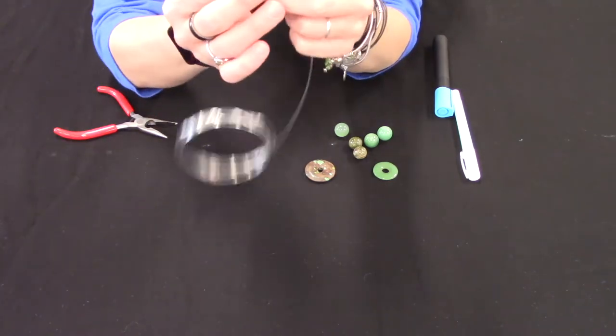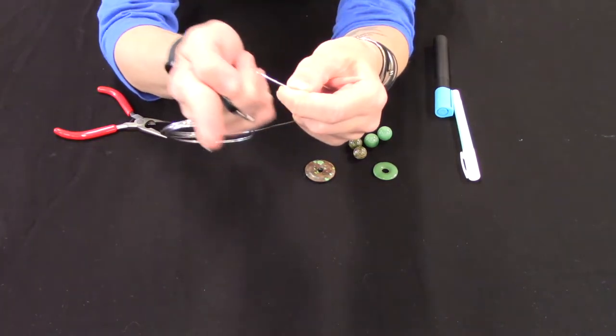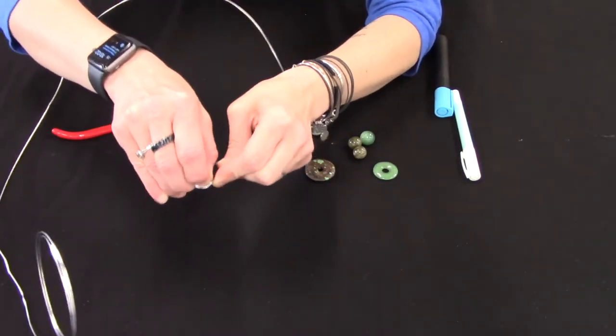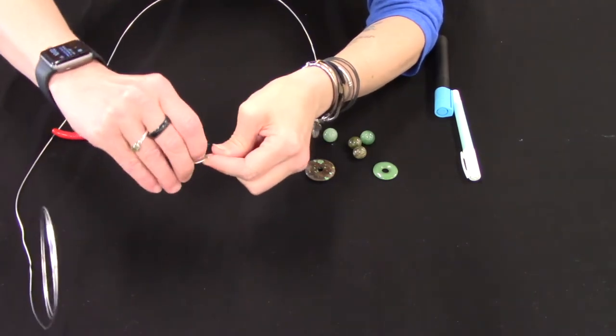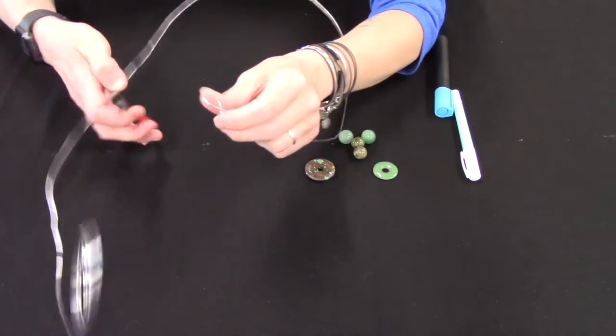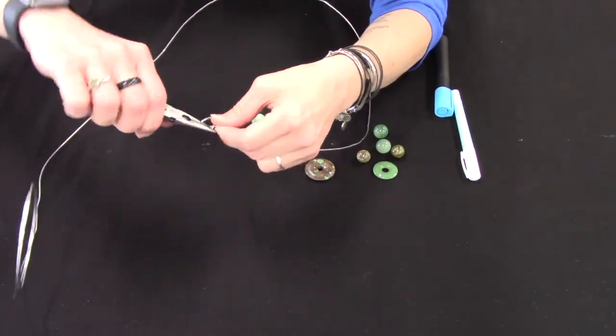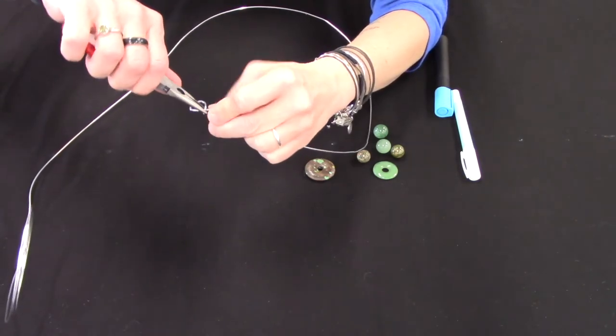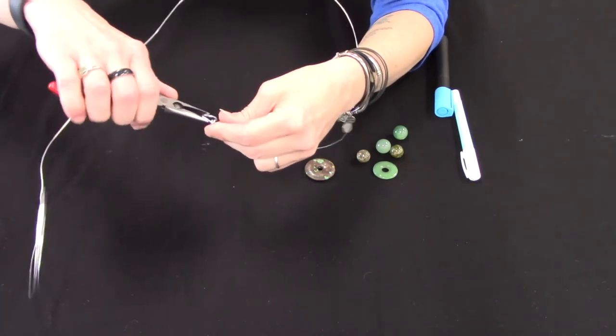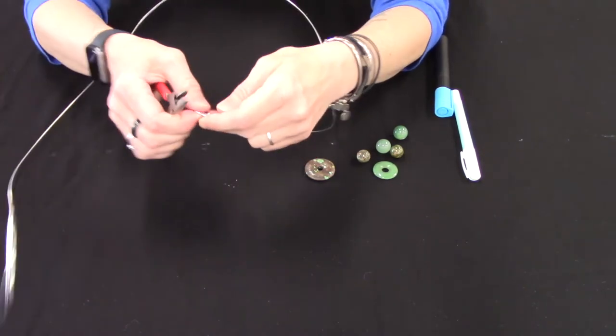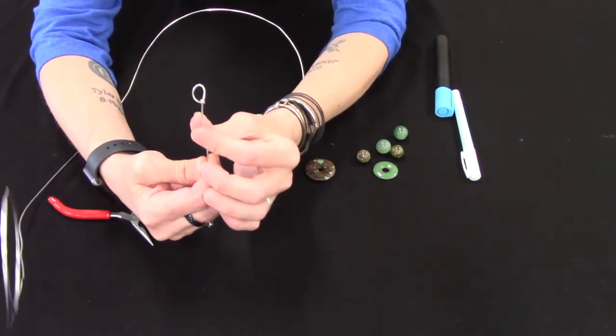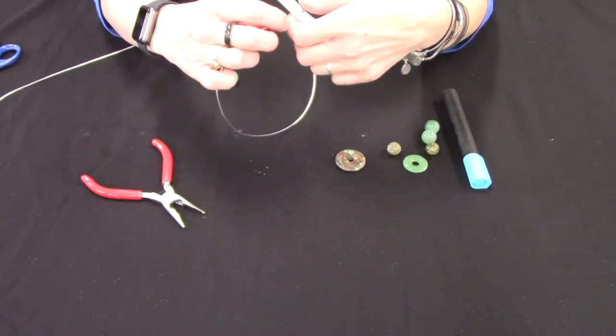And then I'm going to bend it over. This is going to be for the end where we put our fishing line, where we hang it, and just loop it around. Use your pliers to go around and secure it like this. And there's the top end of our project.